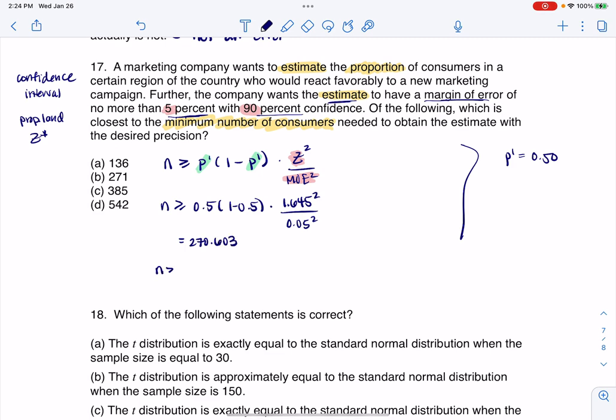Now, ultimately, N needs to be greater than or equal to this number, which, since N has to be a whole number, is going to tell us N has to be greater than or equal to 271, meaning I need at least 271 consumers. That is the minimum number I need.